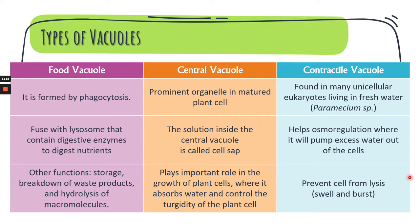The next type is the central vacuole, which only exists as a prominent organelle in mature plant cells. The solution inside the central vacuole is called cell sap. It plays an important role in the growth of plant cells, where it absorbs water and controls the turgidity of the plant cells.